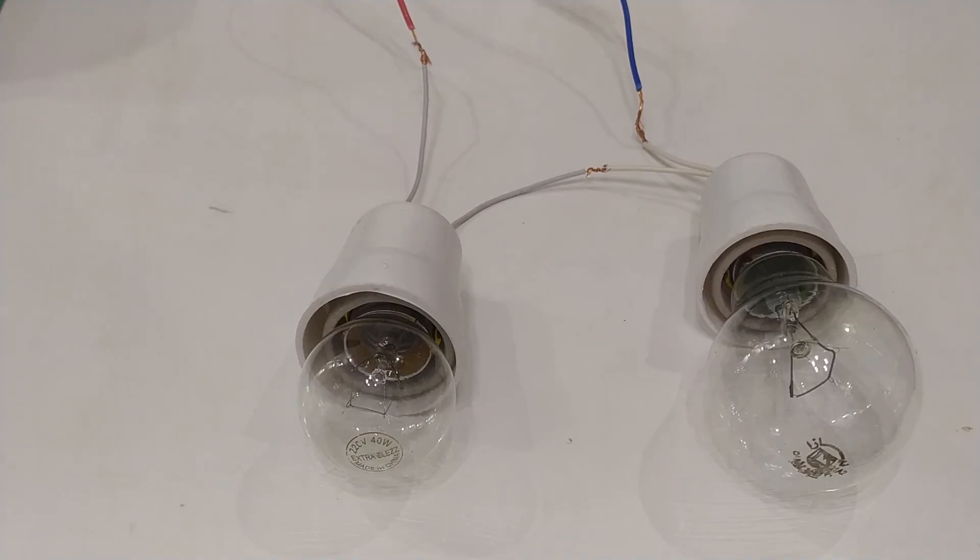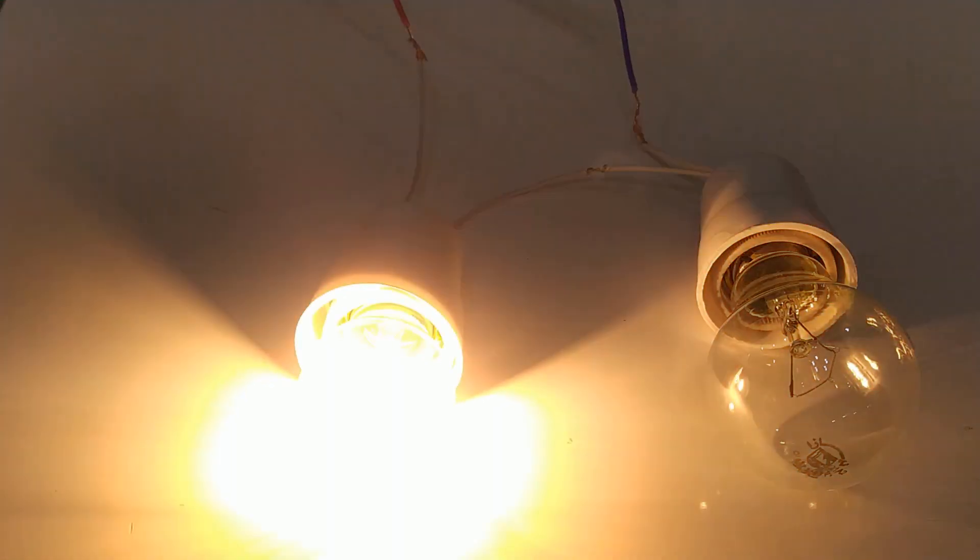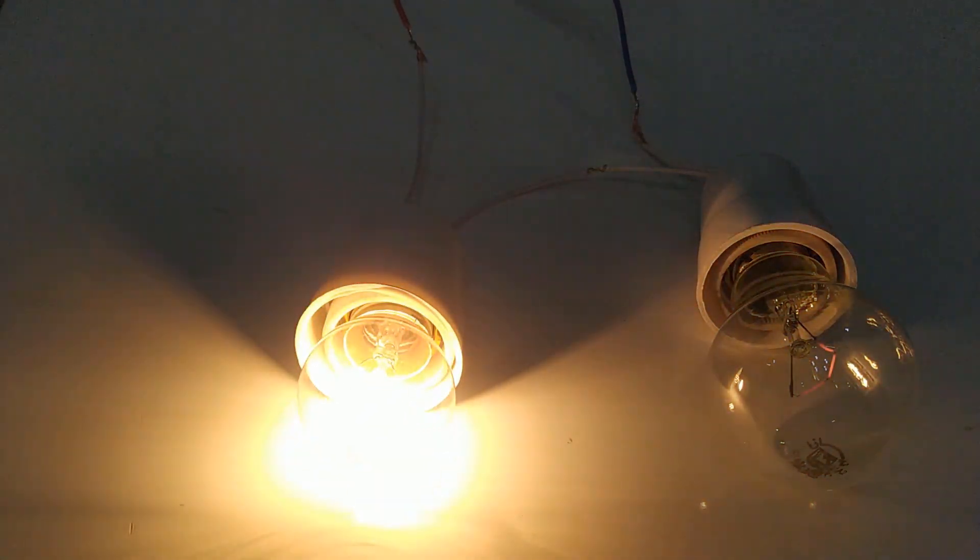Here, the two lamps are connected in series. Let's connect the power source which is equal to 230 volts. As you can see, the 40 watt lamp is glowing brighter than the 100 watt lamp, which has a very weak light.